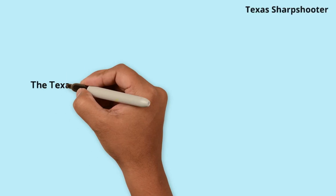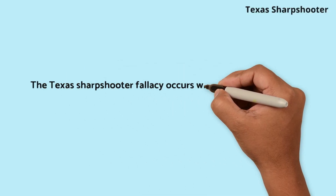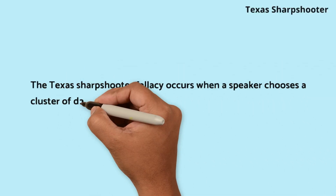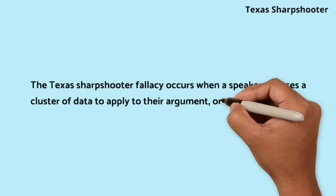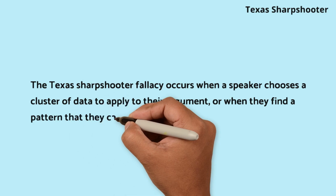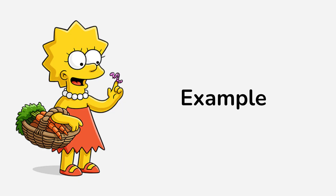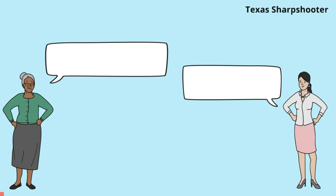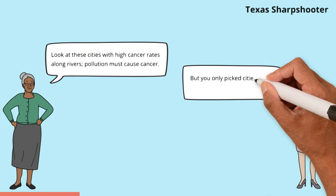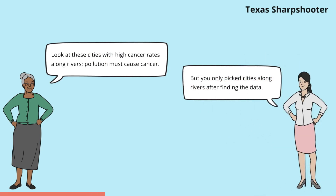The Texas Sharpshooter fallacy occurs when a speaker chooses a cluster of data to apply to their argument, or when they find a pattern that they can apply to a presumption. Here's a small example. Nicole cherry picks data to fit a hypothesis, ignoring contrary evidence.